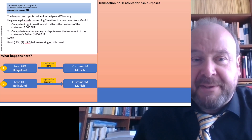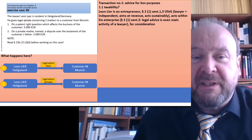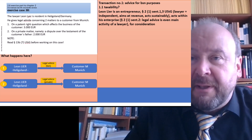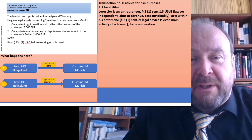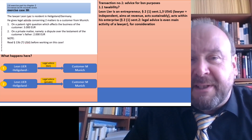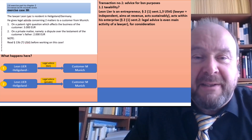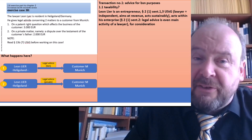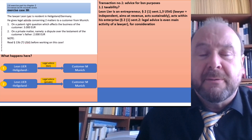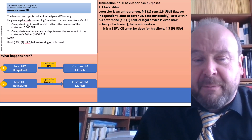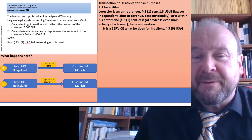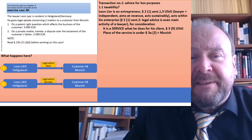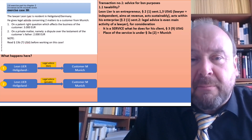Let's begin with the first transaction: advice given for business purposes. We test taxability under §1(1) number 1 using the usual five criteria. Leon is an entrepreneur; he acts within his enterprise. Giving legal advice is even the main activity of a lawyer, not an ancillary one. He is active for consideration because he charges a price. He doesn't deliver a good — it is a service under §3(9).